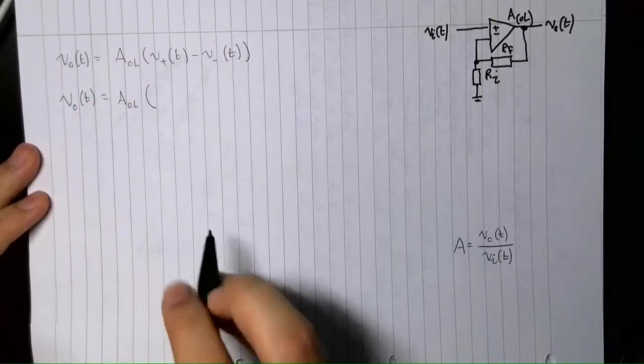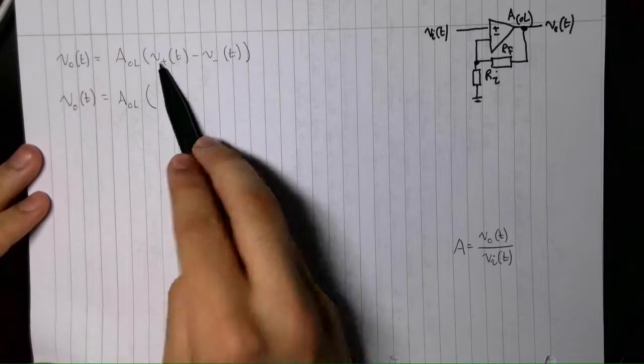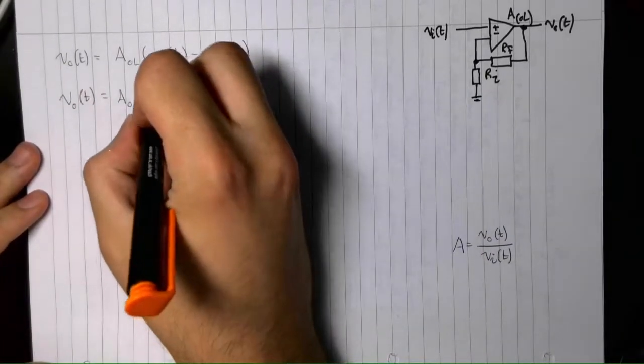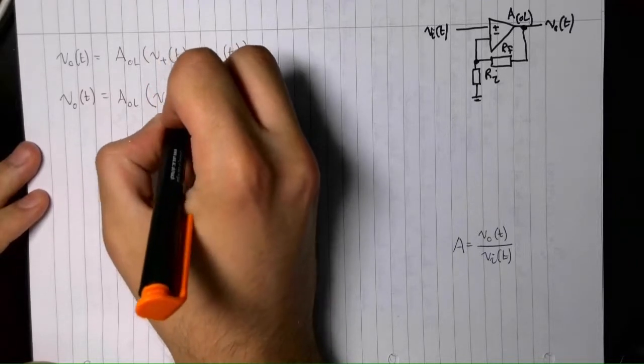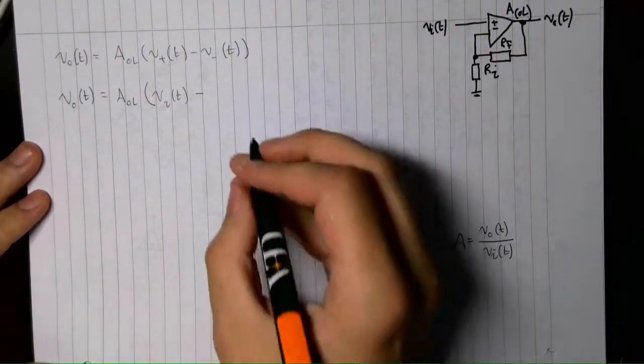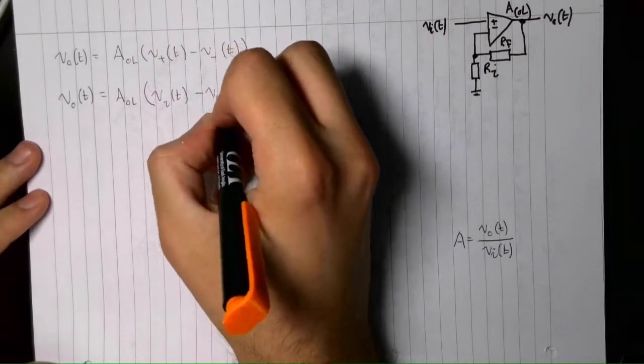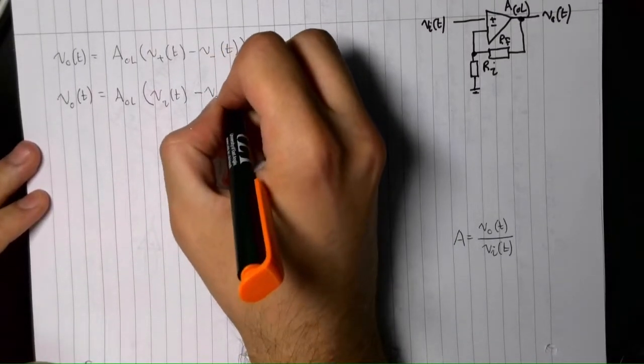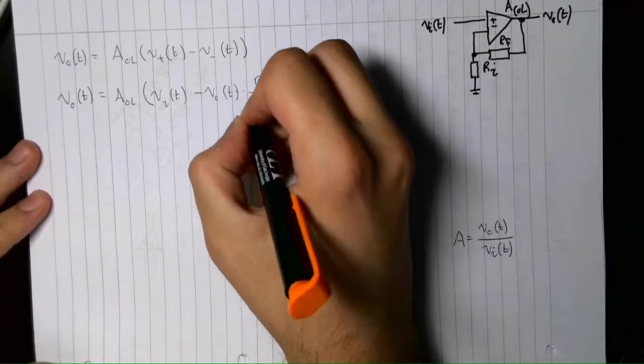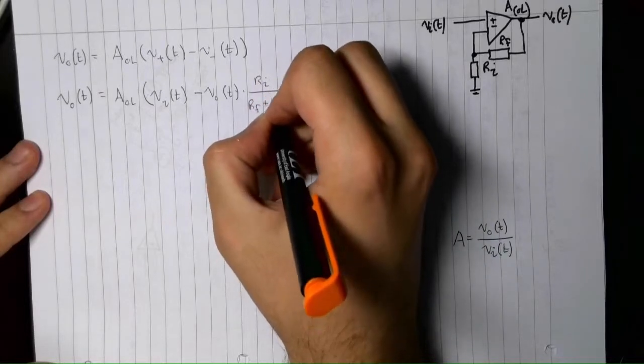I'm also going to change the non-inverting input voltage to Vi as that's what we have labeled here. So, the voltage at the inverting input is now just the voltage at the output multiplied by Ri on Rf plus Ri.